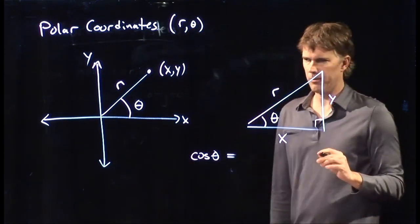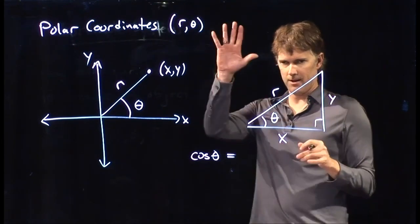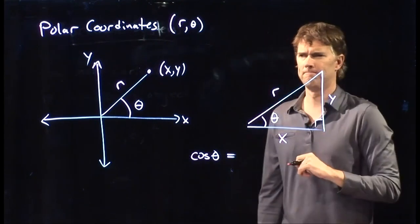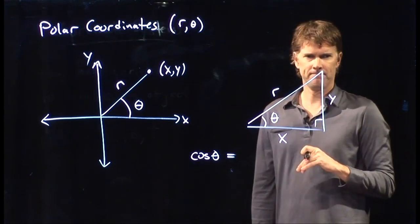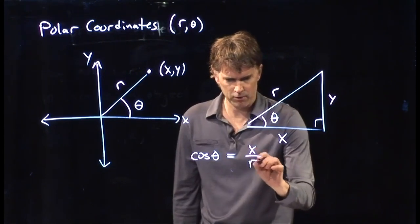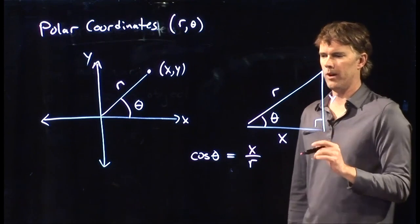Good old SOHCAHTOA, right? What is the cosine of theta? Somebody shout it out. Raise your hand and shout it out. What's the cosine of theta in this picture? Cosine of theta equals x over r, right? SOHCAHTOA. Cosine is adjacent over hypotenuse.